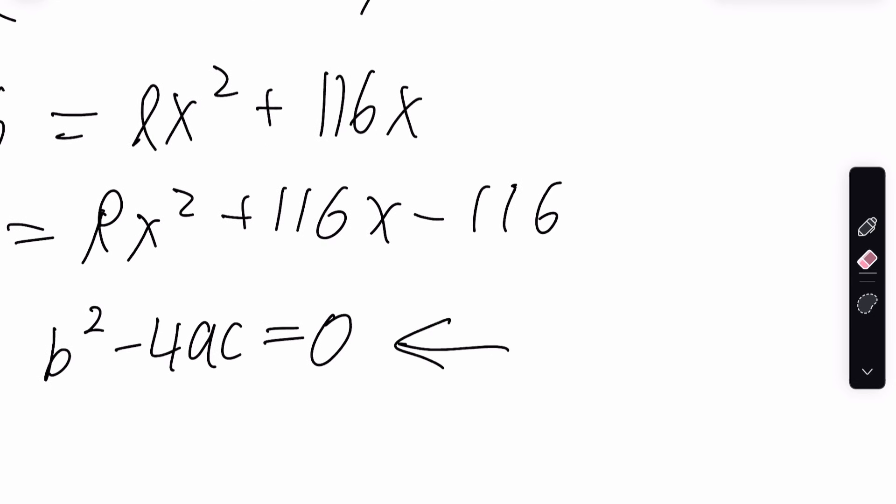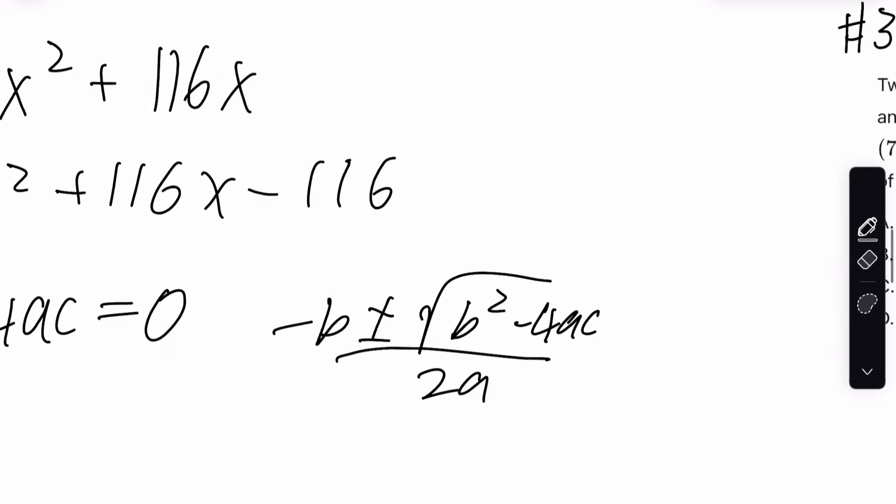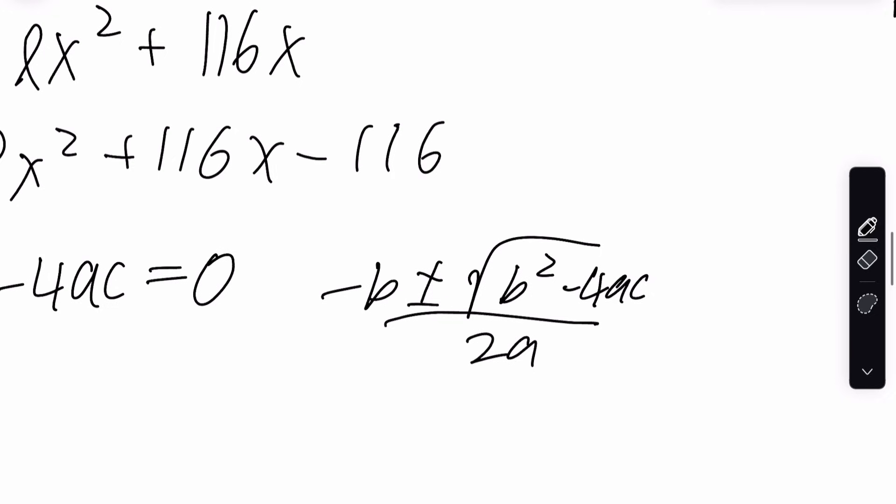Now, why did we do this? What even is this? B squared minus 4AC is called the discriminant. It's part of the quadratic formula. The quadratic formula looks like this, and this, the part inside of here, all it determines is if a quadratic or a parabola has solutions, meaning does it cross the x-axis. A parabola can only cross the x-axis two times, one time, or zero.